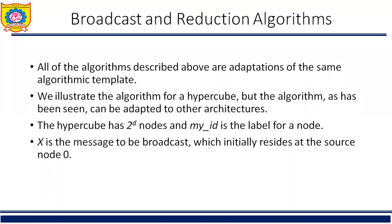Comparing the broadcast and reduction algorithms on mesh, hypercube, and balanced tree reveals that the basic communication pattern for one-to-all broadcast is identical on all four interconnection networks shown in earlier slides. For simplicity, the algorithms are described in the context of a hypercube, assuming the number of communicating processes is a power of 2. However, they apply to any network topology and can easily be extended to work for any number of processes.